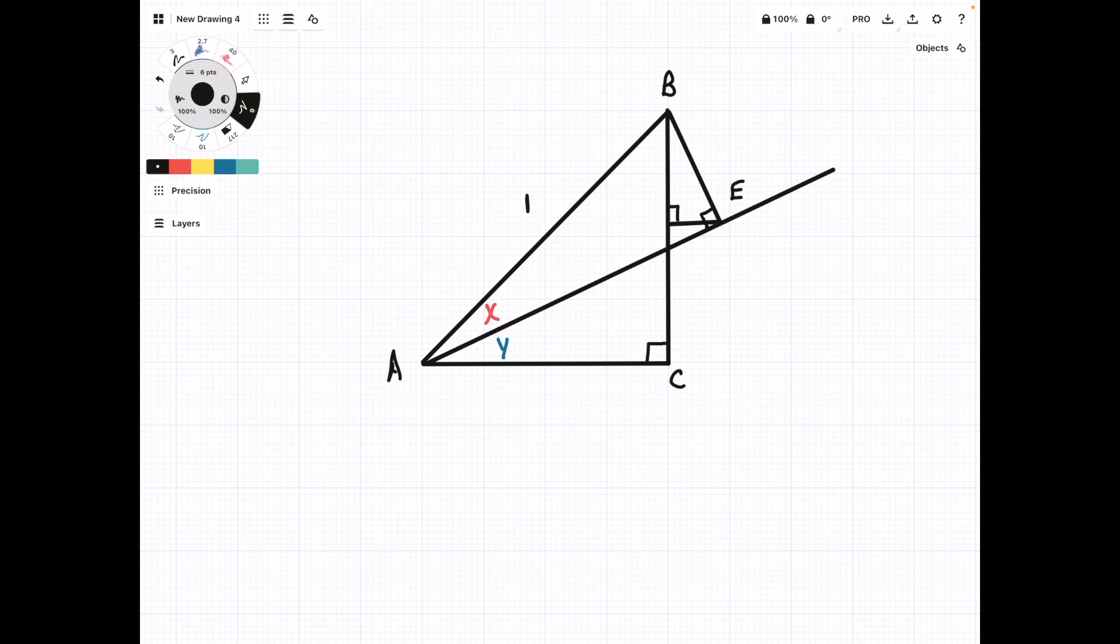Finally, we're going to drop a line like this and complete the rectangle in the bottom right. We'll label the last two points. So the intersection here is D, and this one down at the bottom is going to be F.